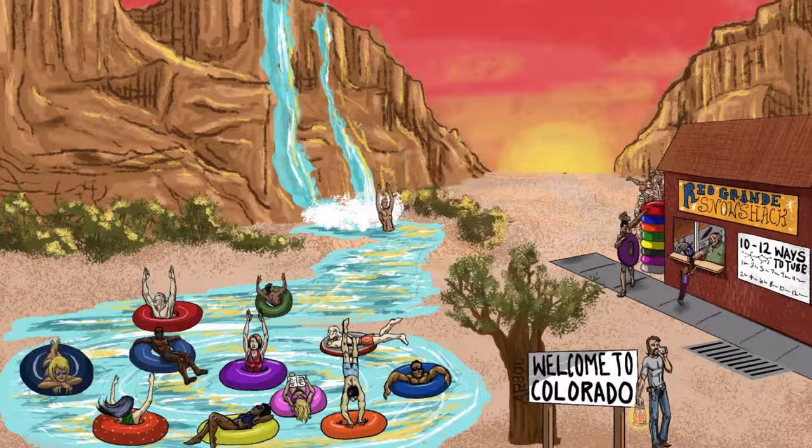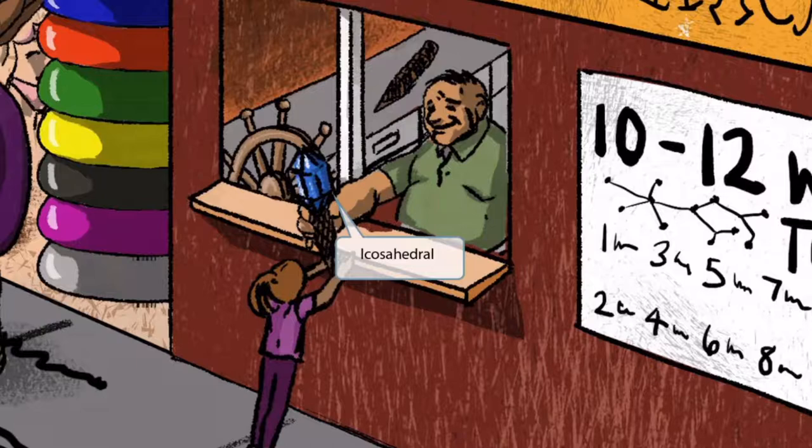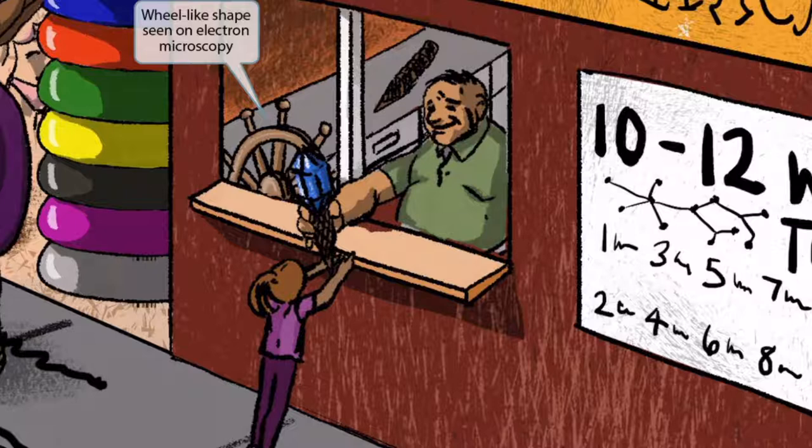Now let's turn our attention to the girl near the Rio Grande Snow Shack. Notice that she's buying a snow cone that has a unique icosahedral shape. This is to remind you that Reoviruses have an icosahedral-shaped capsid. If you look next to the guy selling her the snow cone, you can see there is a wheel decoration.